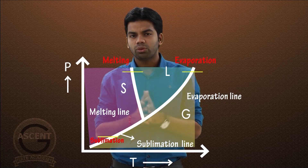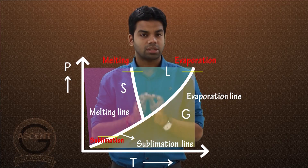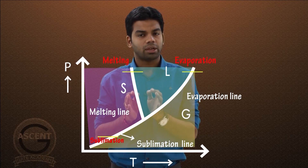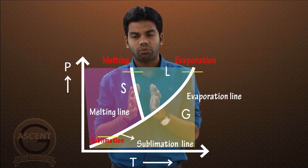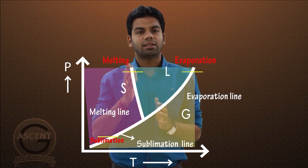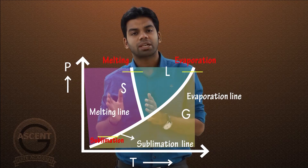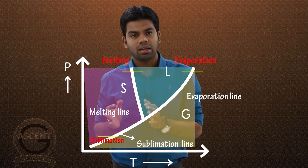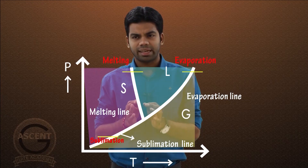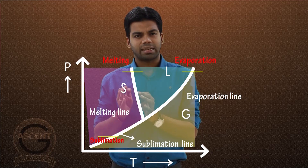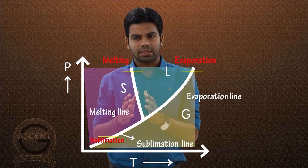The melting curve for water has a negative slope, which is very specific to water. This means that as pressure increases, the melting temperature of water decreases. However, the rate at which the melting temperature decreases is not very high, but it still decreases.